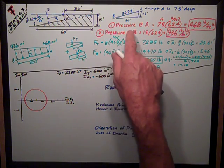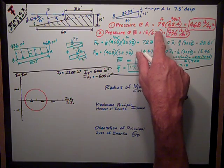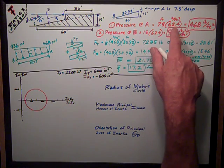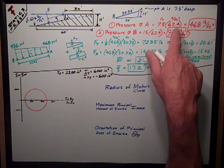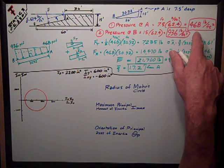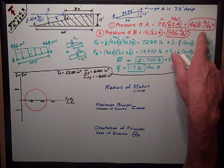Therefore, it's pretty easy. The pressure at point A is the depth times the density, which is 62.4 pounds per cubic foot. It works out to be the pressure at A is 468 pounds per square foot.